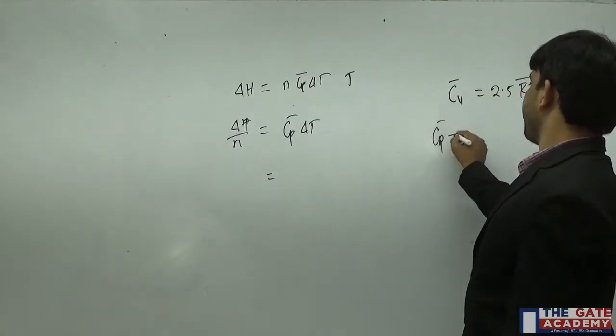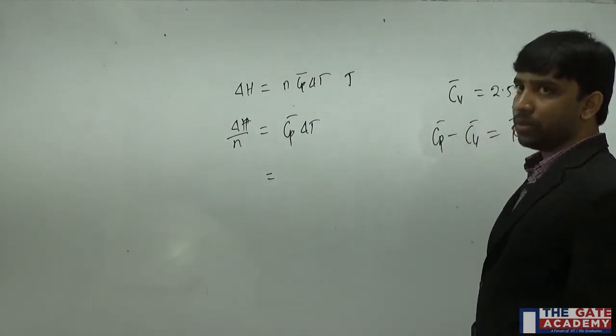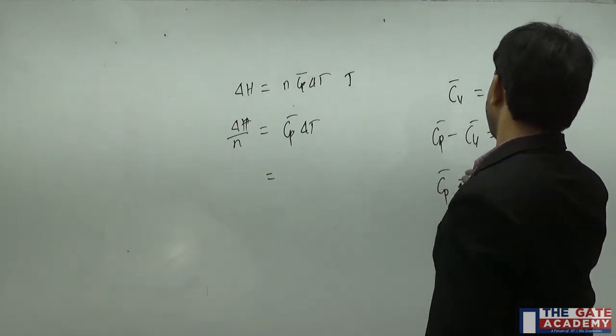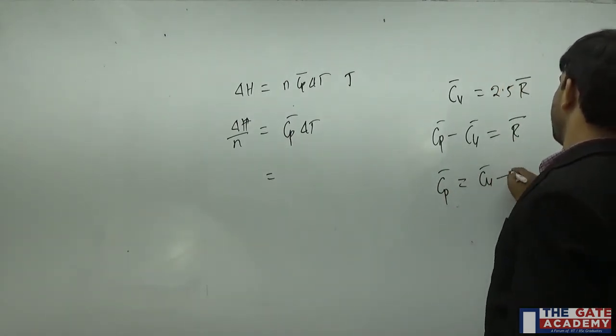Cp bar minus Cv is your R bar, the universal gas constant. From here I can get the value of Cp. Cp is nothing but Cv plus R. Cv is 2.5 plus R, so I can say it's 3.5 times R.